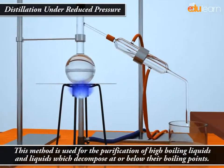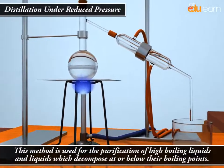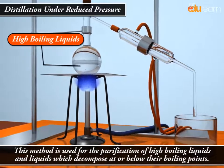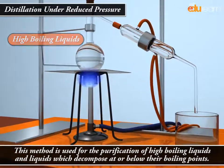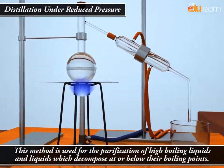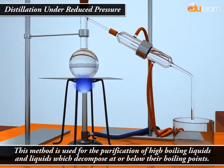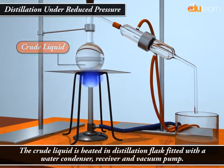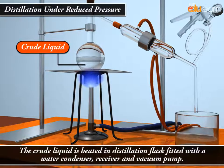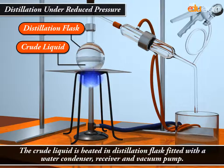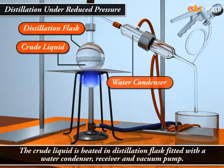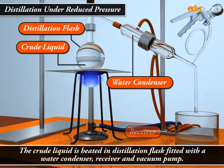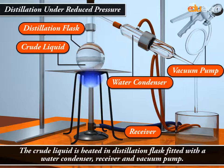This method is used for the purification of high boiling liquids and liquids which decompose at or below their boiling points. The crude liquid is heated in a distillation flask fitted with a water condenser, receiver and vacuum pump.